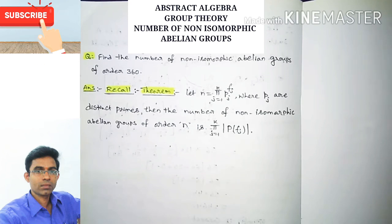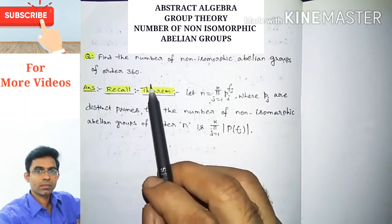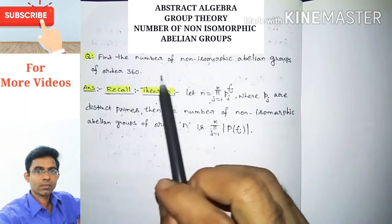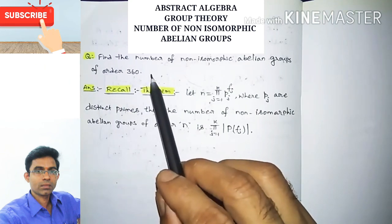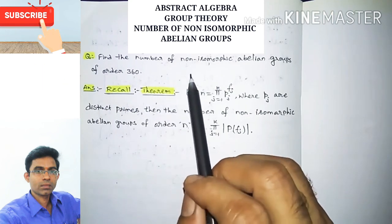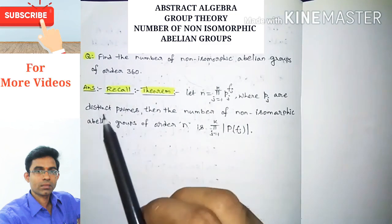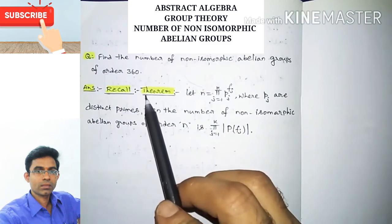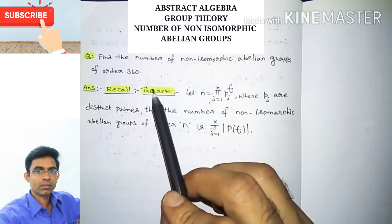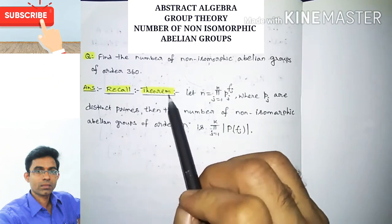The question is: find the number of non-isomorphic abelian groups of order 360. For this we have a standard theorem, so let us recall the theorem.